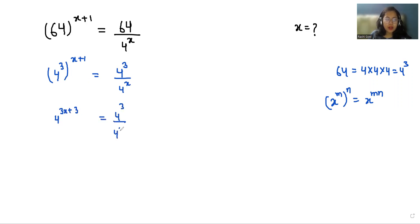Now I'm going to multiply both sides by 4^x. We can cancel out the 4^x, and according to the exponent rule x^m times x^n = x^(m+n), we get 4^(3x+3+x) equals 4^3, which simplifies to 4^(4x+3) equals 4^3.